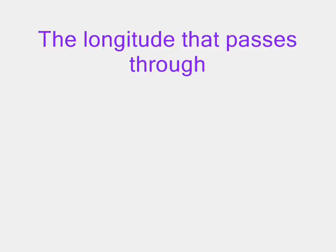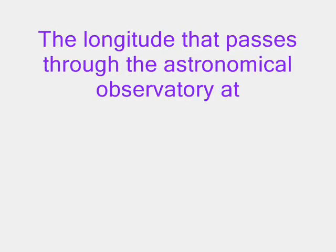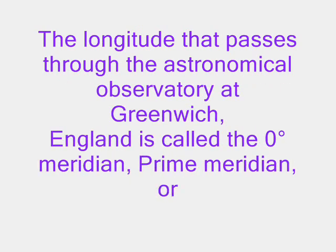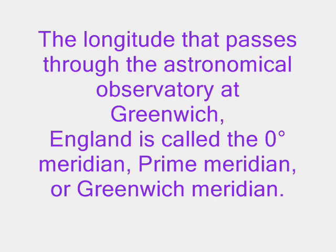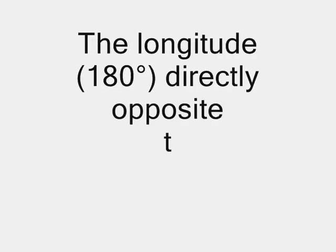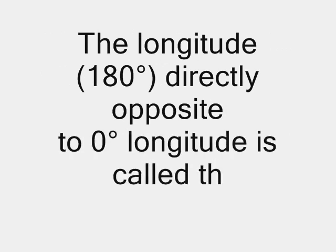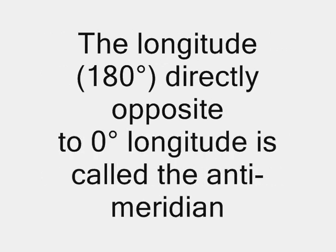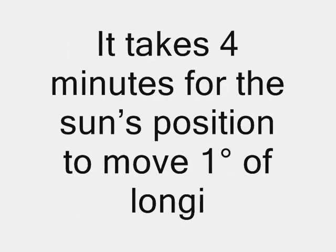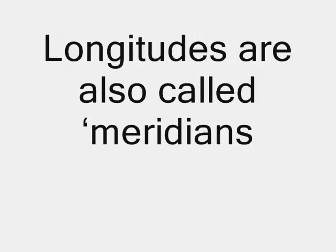The longitude that passes through the astronomical observatory at Greenwich, England, is called the 0 degree meridian, prime meridian, or Greenwich meridian. The longitude 180 degrees, directly opposite to 0 degree longitude, is called the anti-meridian. It takes 4 minutes for the Sun's position to move 1 degree of longitude. Longitudes are also called meridians.